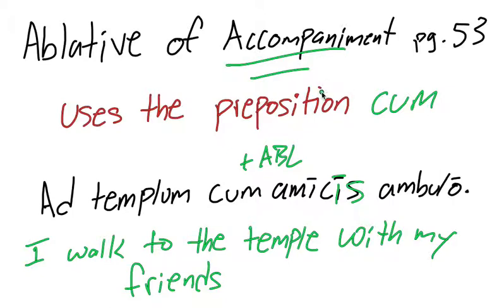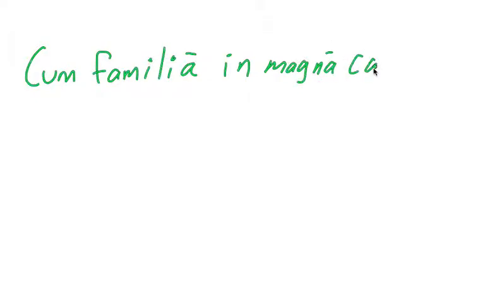So let's do one more example of the ablative of accompaniment. Cum familia in magna casa maneo. So here's our ablative of accompaniment, cum familia, so I'll mark that up here, ablative of accompaniment.